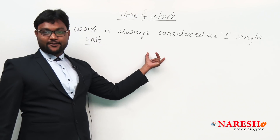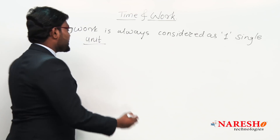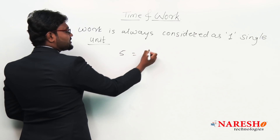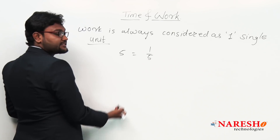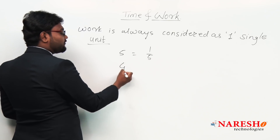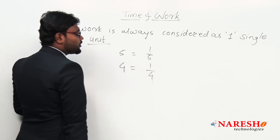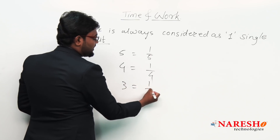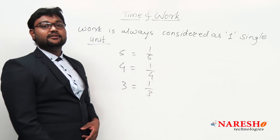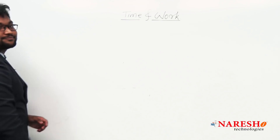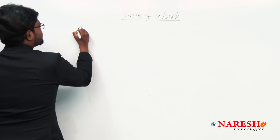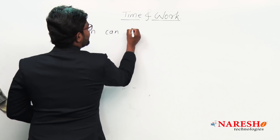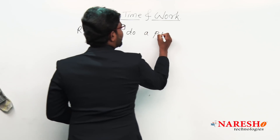So from this we understand: work is always considered as one single unit. Therefore, if a person can do complete work in five days, his one-day work is one by five. If a person can do work in four days, his one-day work is one by four. If a person can complete work in three days, his one-day work is one by three.